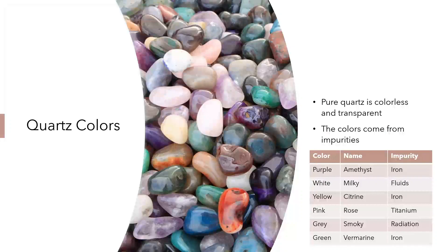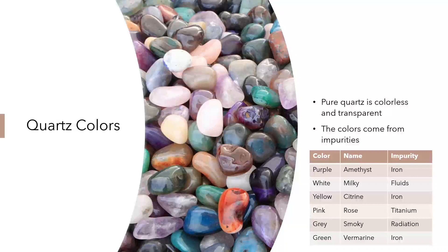The word quartz describes a certain mineral chemistry that forms a certain structure. Quartz has so many colors because it's easy for a stray element to get caught in that structure of a crystallized mineral of quartz. What these impurities do is they mess with the electrons floating around in the molecules, and that changes the color of light that is reflected back out to your eye.